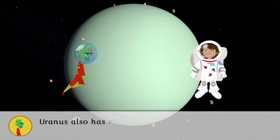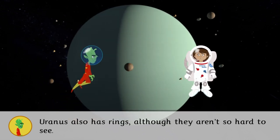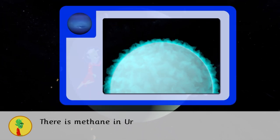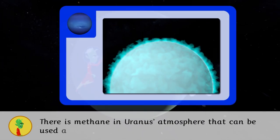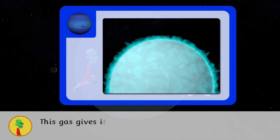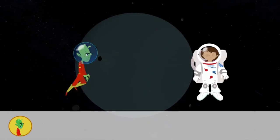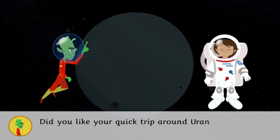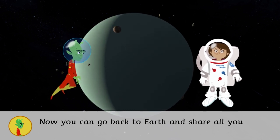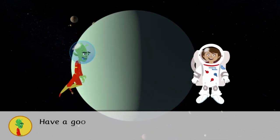Uranus also has rings, although they aren't so hard to see. There is methane in Uranus's atmosphere that can be used as fuel. This gas gives it its blue color. Did you like your quick trip around Uranus? Now you can go back to Earth and share all you learned.